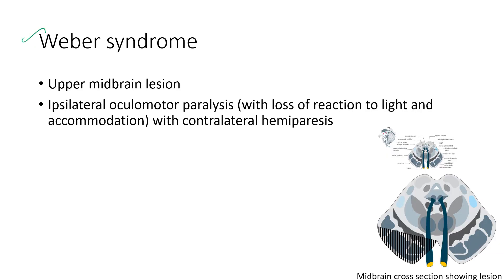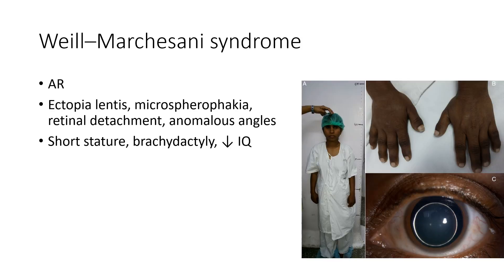Next is Weber syndrome. It is an upper midbrain lesion characterized by ipsilateral oculomotor paralysis with loss of reaction to light and accommodation, with contralateral hemiparesis.